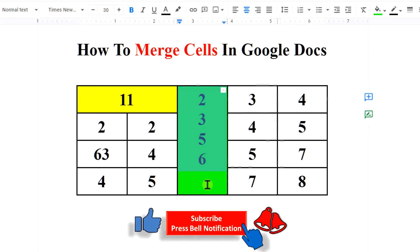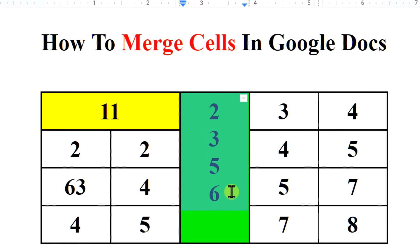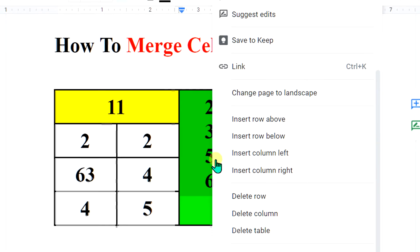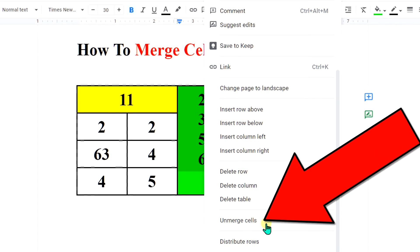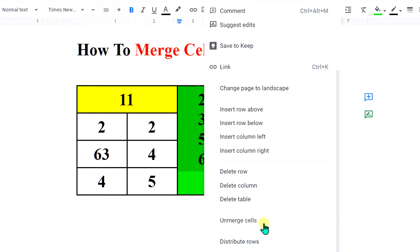If you want to unmerge the cells, just select the cell, right click, and this time instead of merge cells you will see unmerge cells. Clicking on this option will unmerge the cell.